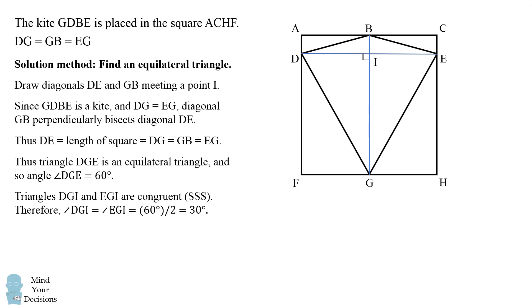We then have triangles DGI and EGI being congruent by side, side, side. Therefore, the angles DGI and EGI will be equal to each other, and it'll be half of 60 degrees, which is 30 degrees.